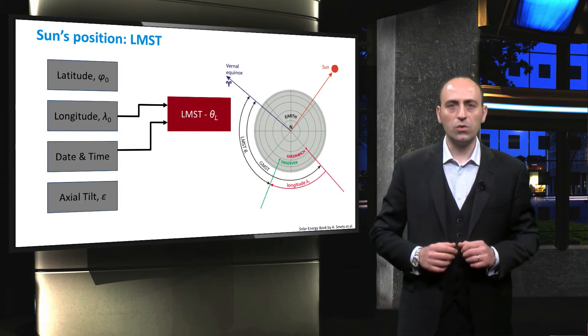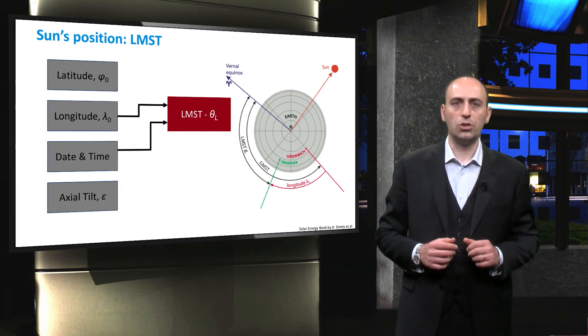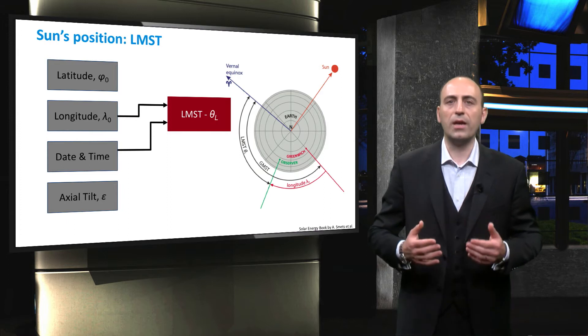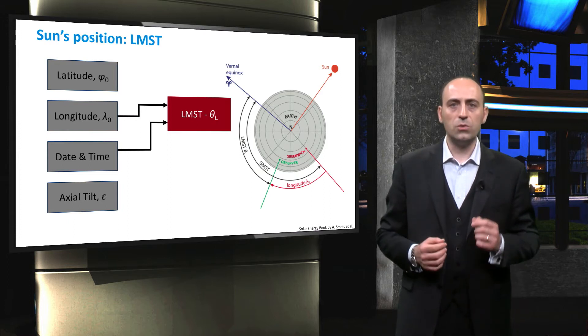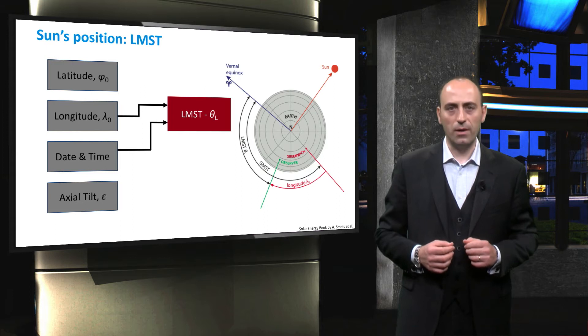In the same picture, the longitude of the location is shown in red, since, together with the date and the time, it is one of the inputs to calculate the local mean sidereal time.